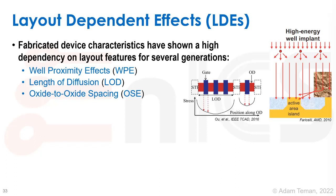Fabricated device characteristics have shown a high dependency on layout features for several generations. Well proximity effects — when we define our well, different types of implants can hit the well and will hit the active areas differently, with different concentrations depending on how far you are from the edges of the well. That's a well proximity effect.